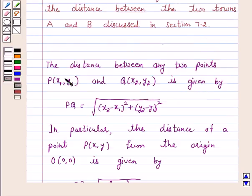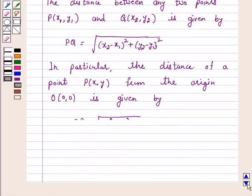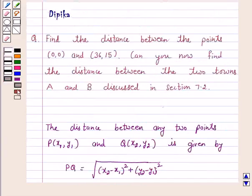We know that the distance between any two points P(x₁,y₁) and Q(x₂,y₂) is given by PQ = √[(x₂-x₁)² + (y₂-y₁)²]. In particular, the distance of a point P(x,y) from the origin O(0,0) is given by OP = √(x² + y²). So this is the key idea behind this question, and we will use this to solve the above question.